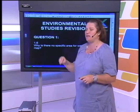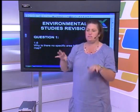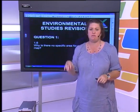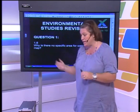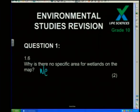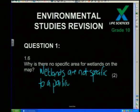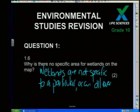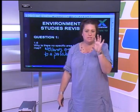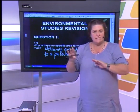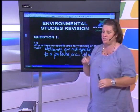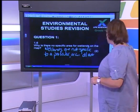Why is there no specific area for wetlands on the map? We labeled succulent Karoo, Nama Karoo, and all the others from A through F, but wetlands weren't included. The reason is that wetlands are not specific to a particular area — if we look at the map, wetlands occur all over the country. We can't pinpoint a specific area because they're distributed in small patches here and there.